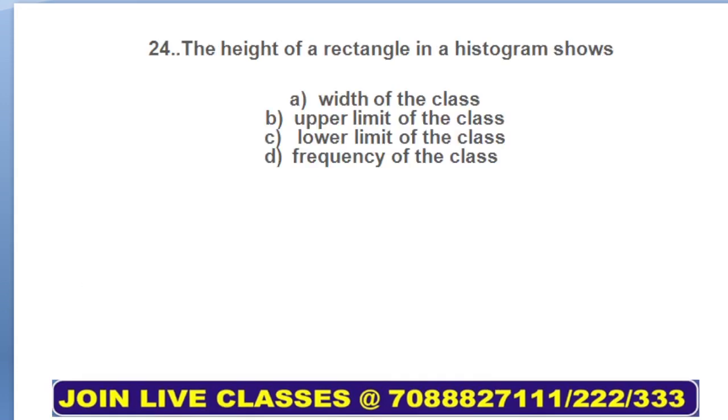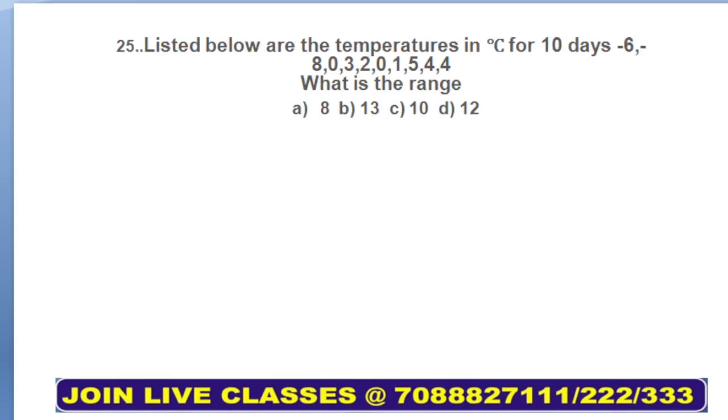Moving on to next part, question number 24: the height of a rectangle in a histogram shows what? Come on, comment with the answers below. Frequency of the class. Histogram is always drawn with respect to frequency of the data given. Next is: listed below are the temperatures in degree Celsius for 10 days: -6, -8, 0, 3, 2, 0, 1, 5, 4, 4. What is the range? You need to calculate the range here. Range means highest value minus lowest value.